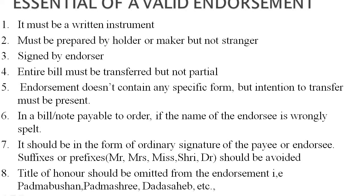The sixth essential: in a bill not payable to order, if the name of the endorsee is wrongly spelt, then the endorsee, when he wants to do further endorsement, has to sign his name as spelt in the instrument earlier and write the correct spelling within brackets after his endorsement. The seventh essential is that it should be in the form of an ordinary signature — whatever the ordinary signature of the endorser is, that has to be used.